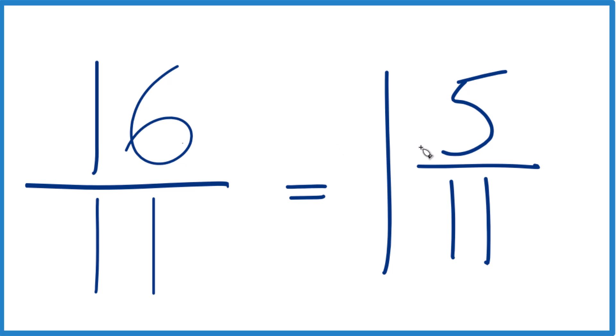These have the same value, just written differently. We can even check that, because 1 times 11 is 11. 11 plus 5, that's the 16, and then we just keep this the same here.